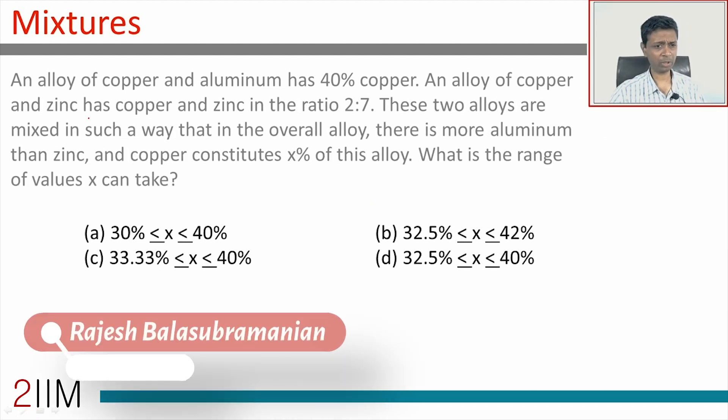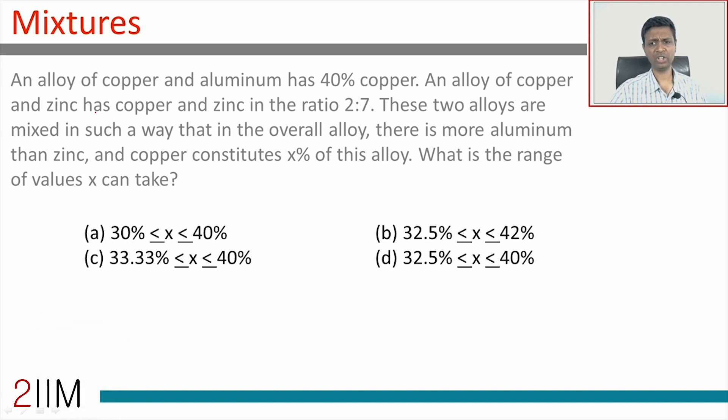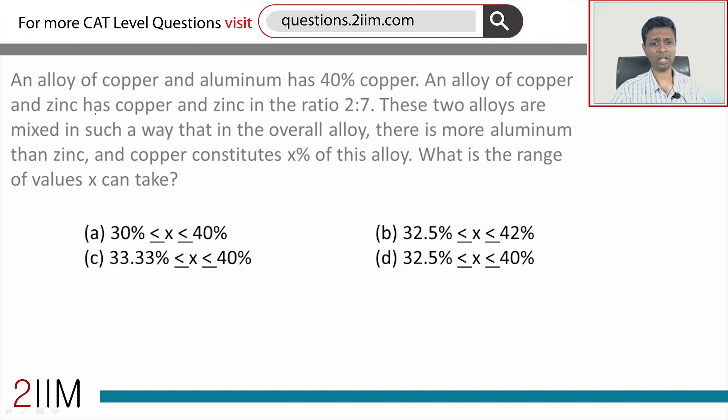This is a question on mixtures, a very interesting question. An alloy of copper and aluminum has 40 percent copper. An alloy of copper and zinc has copper and zinc in the ratio 2 is to 7. These two alloys are mixed in such a way that in the overall alloy there is more aluminum than zinc.